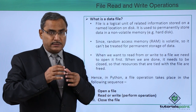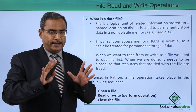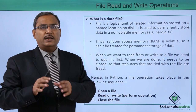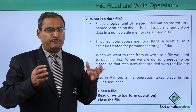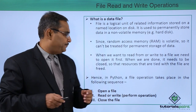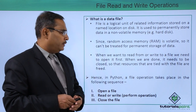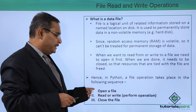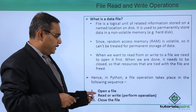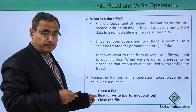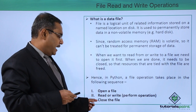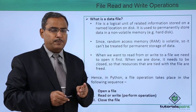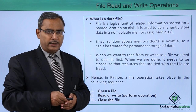Whatever operations we are supposed to do, we let them complete and then we close the file so that the allocated resources are declared as free. Hence in Python, a file operation takes place in the following sequence: open a file, read or write from the respective operation, and then close the file. There are three steps with the help of which file handling can be done in Python.